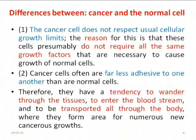Here I'm discussing the differences between cancer cells and normal cells. It is very important to understand why one cell becomes a cancer cell. The first point is that cancer cells do not respect usual cellular growth limits. These cells presumably do not require all the same growth factors the body provides — they may be utilizing something else for their growth.